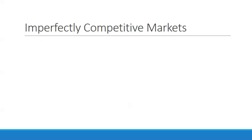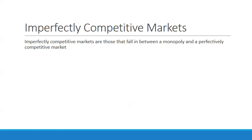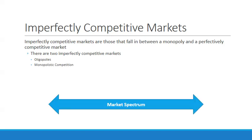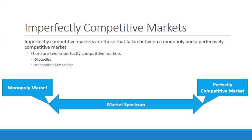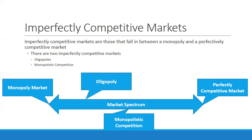Now we'll look at imperfectly competitive markets — monopolistic competition and oligopoly. Imperfectly competitive markets fall between a monopoly and a perfectly competitive market. On the market spectrum, perfectly competitive is on one end and monopoly on the other. Monopolistic competition sits in the middle, while the oligopoly leans more toward the monopoly side — similar to the spectrum used with economic systems.